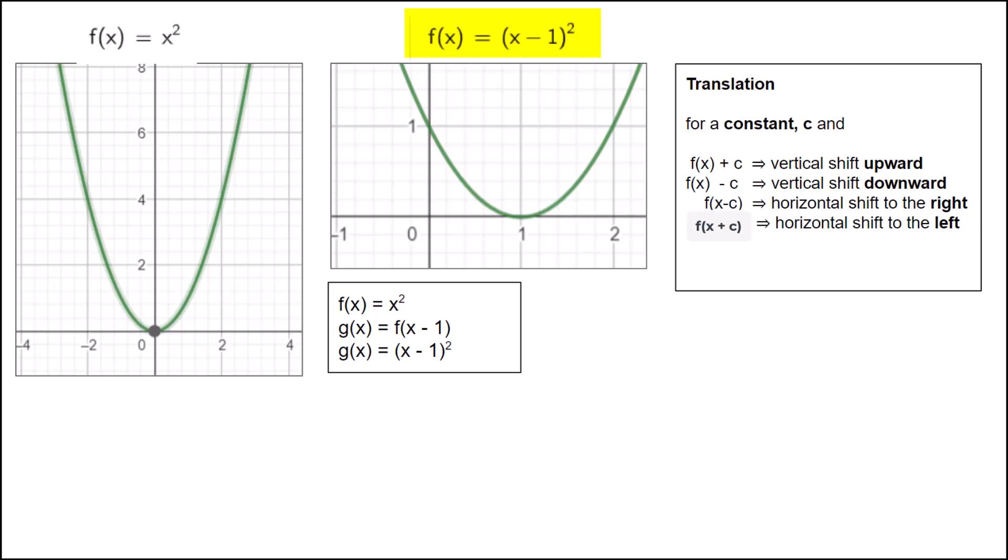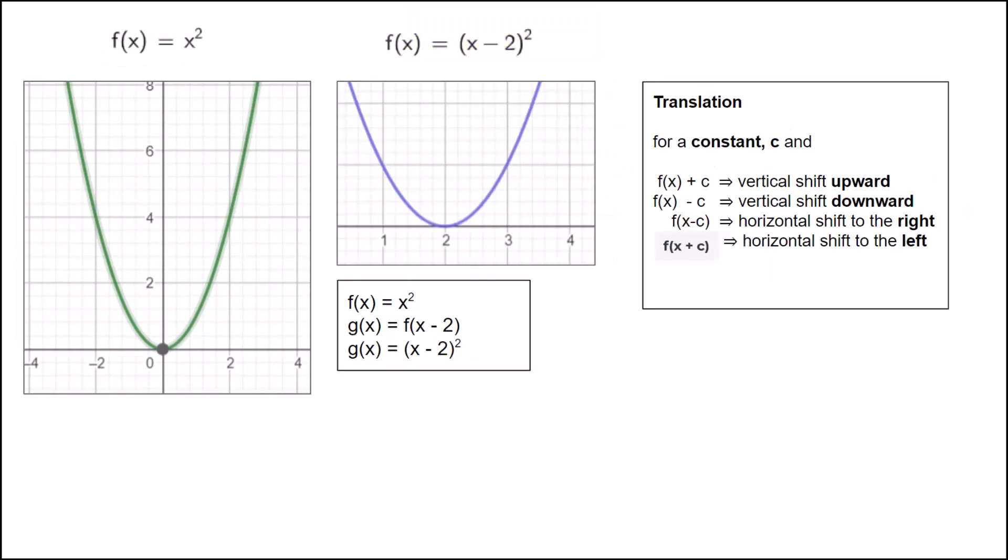When we do that, for every x term we have in the original function, we replace that with x minus 1. Doing that gives us (x - 1) squared. We can shift the original function however many units we wish by adding or subtracting additional quantities.